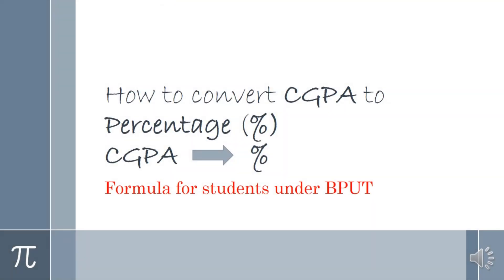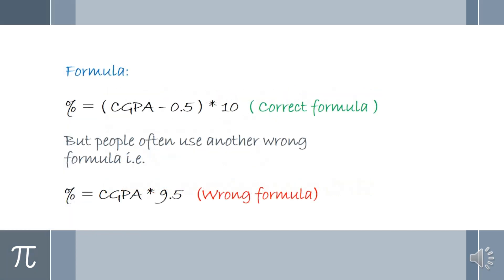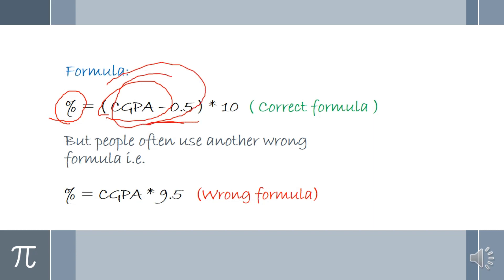How to convert CGPA to percentage — a formula for students who are studying. The formula to convert CGPA to percentage is simple: percentage is equal to CGPA minus 0.5, and to the whole product you multiply it with 10.